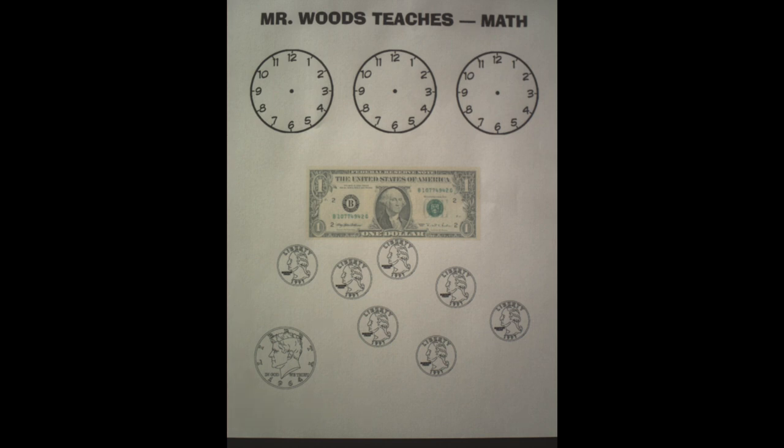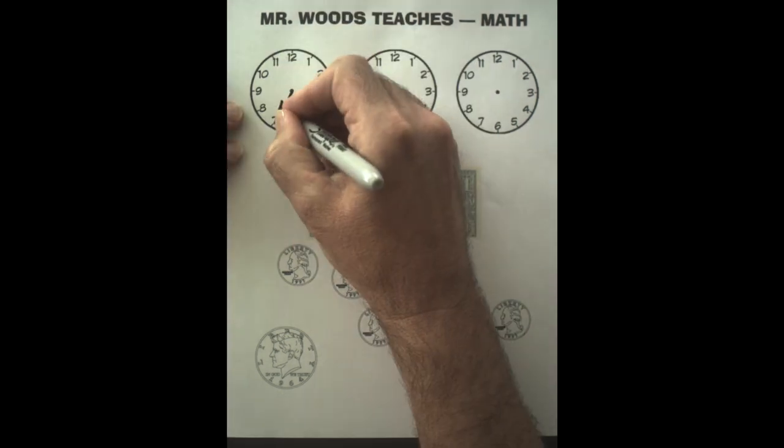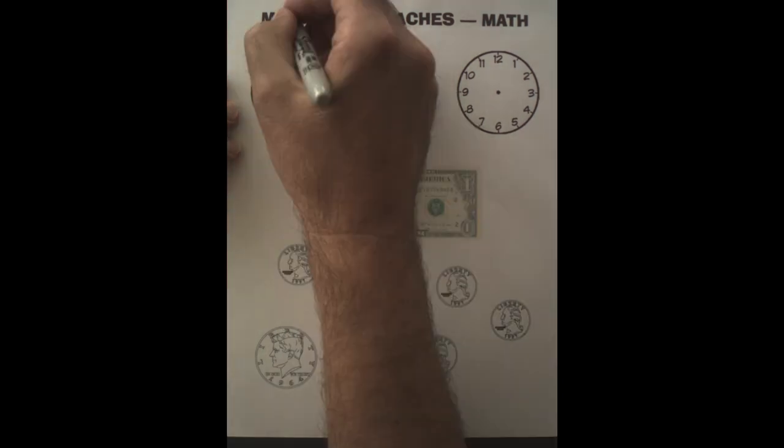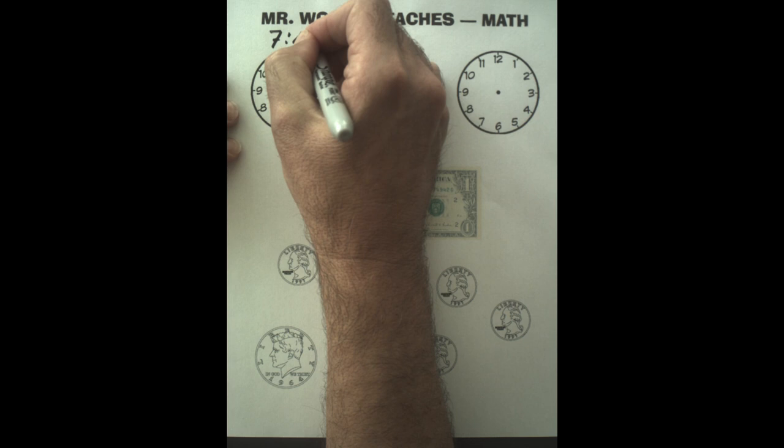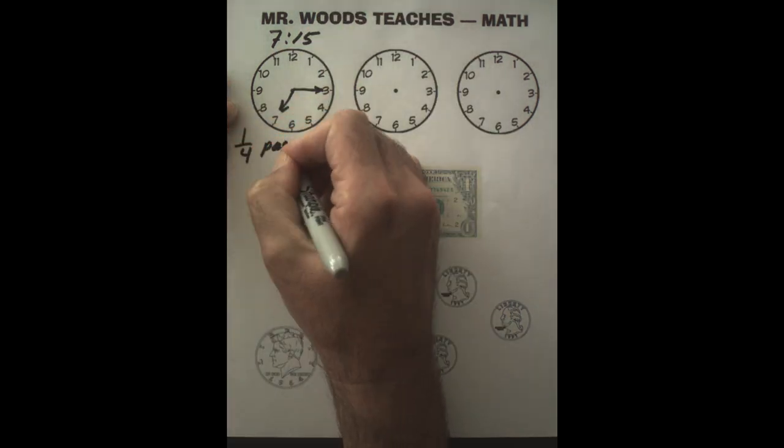Next up friends, we're going to have some real world applications for fractions. If we look and see what the time is, let's take a look here. I have a short hand, long hand. What is this? Some people say it's seven fifteen, or we can say it's a quarter past seven.